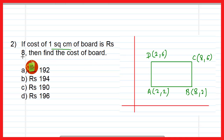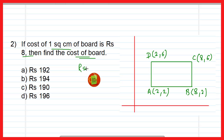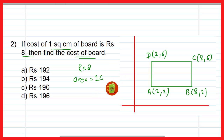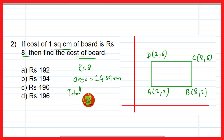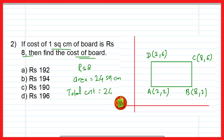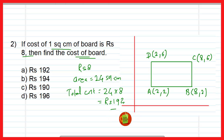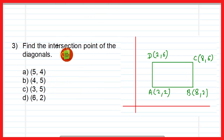Now the second question: the cost of one square centimeter of board is ₹8 — find the cost of the board. The cost per square centimeter is ₹8, and the area is 24 square centimeters, as calculated in the previous question. So total cost = area × rate per square centimeter = 24 × 8 = ₹192. So option A, ₹192, is the correct answer.